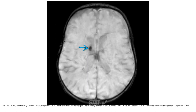This is the SWI MRI at three months of age, showing a focus of signal loss in the right caudothalamic group, consistent with remote germinal matrix hemorrhage. There is no signal loss in the ventricle to suggest an associated component of intraventricular hemorrhage.